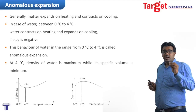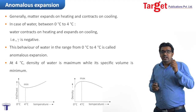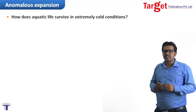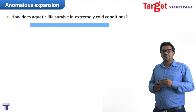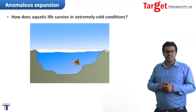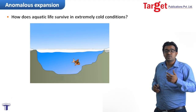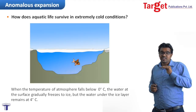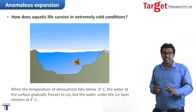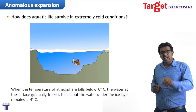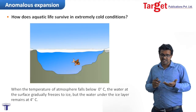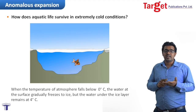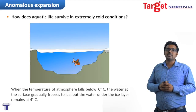The graph explains it all. According to the Anomalous Behavior of Water, there is a question: how does aquatic life survive in extremely cold conditions? When the temperature of the atmosphere falls below 0°C, the water at the surface freezes. But the water under the ice layer remains at 0°C, which helps fish to survive in extremely cold conditions. That's all about thermal expansion, which includes linear expansion, volume expansion, and aerial expansion for solids, as well as thermal expansion of liquids and gases.